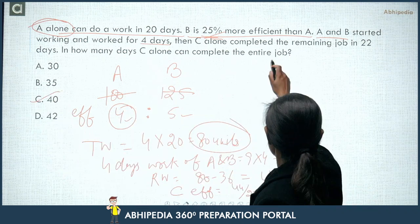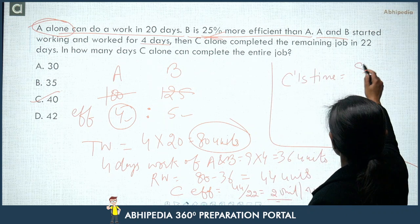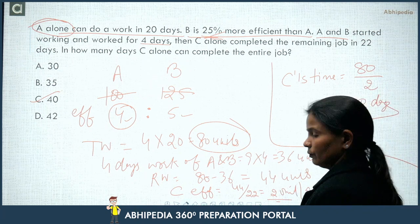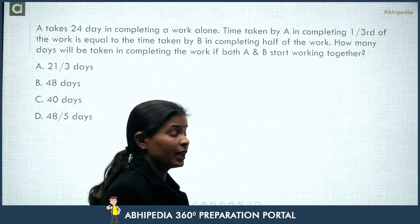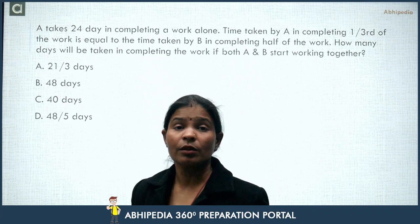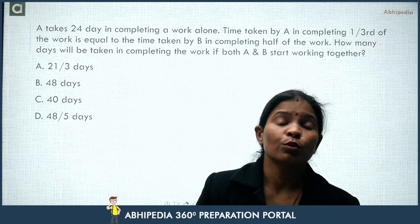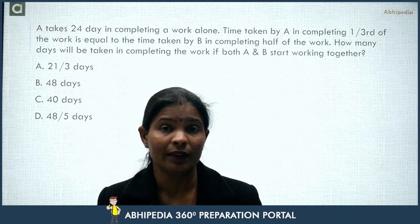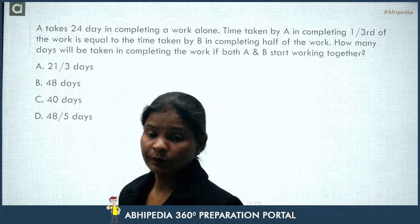So the answer is 40 days. How did we find it? Total work divided by efficiency of C. If you understood, please like and share the video with your friends. Those who haven't subscribed to the channel, please subscribe. If your concepts are not clear, you should go for the Microverses — Abhimanyu IAS is providing Microverses where you can prepare single topics.